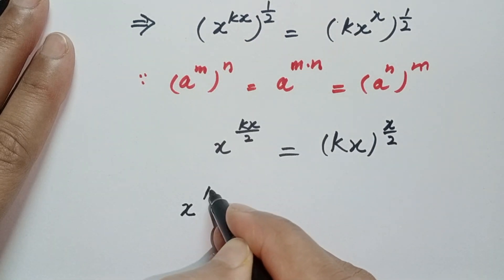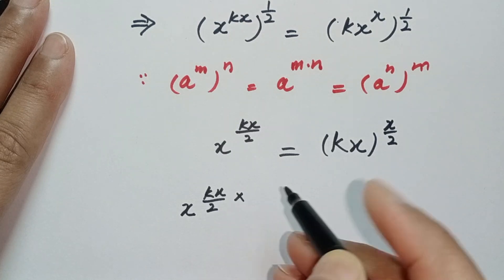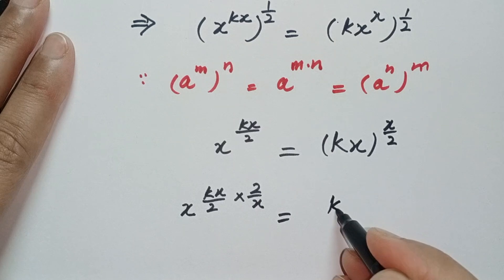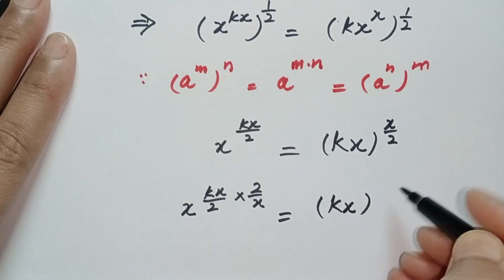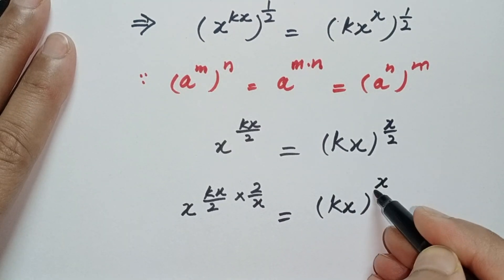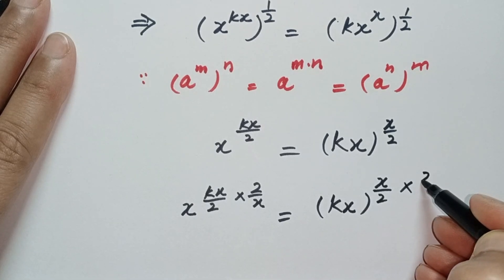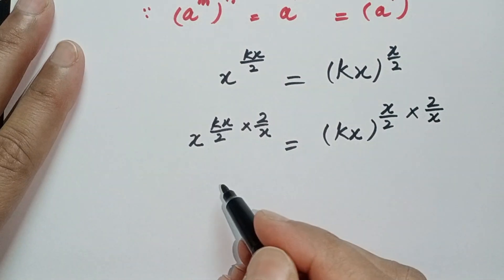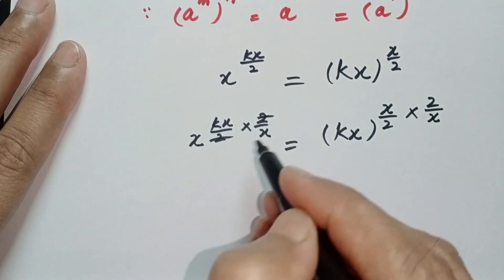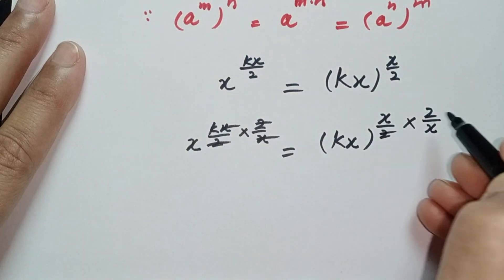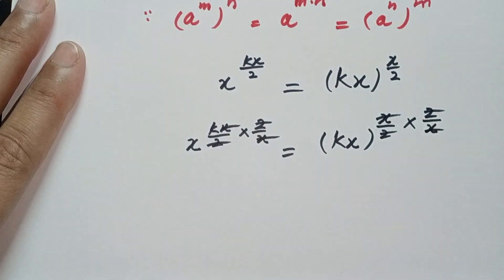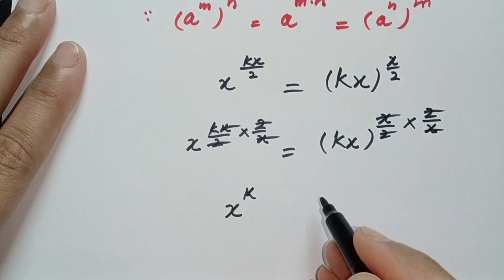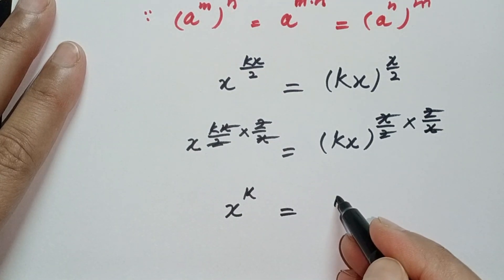We raise both sides to the power 2 over x. On the left, kx over 2 times 2 over x — the 2s cancel and the xs cancel — and similarly on the right. So we are left with: x to the power k is equal to kx.